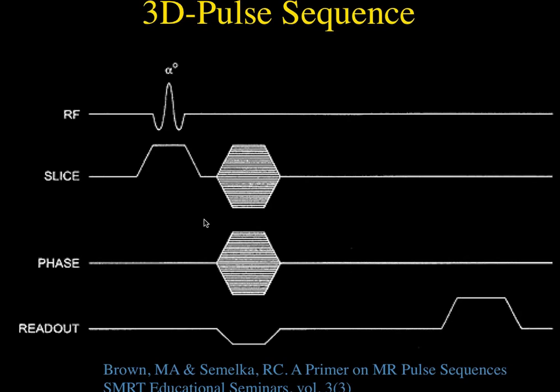In the old days, except for very special circumstances, this was not a viable technique because it just took too long. But now with faster sequences, 3D sequences are becoming more and more common because we can acquire data much faster. The advantage of 3D sequences is that they give better signal to noise, and you get contiguous slices with no skip between them. This allows us to approach isotropic voxels like a CT scanner — the holy grail is to do one sequence and reconstruct it in any plane.